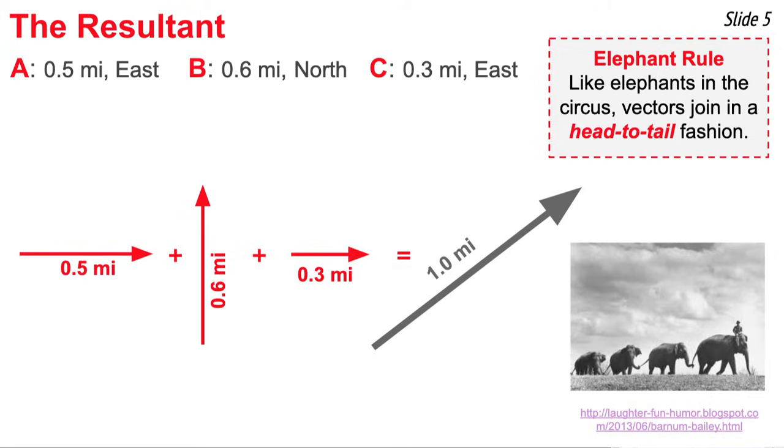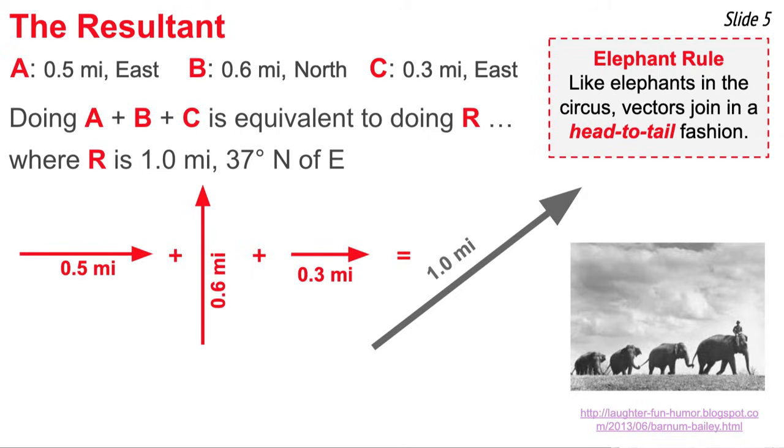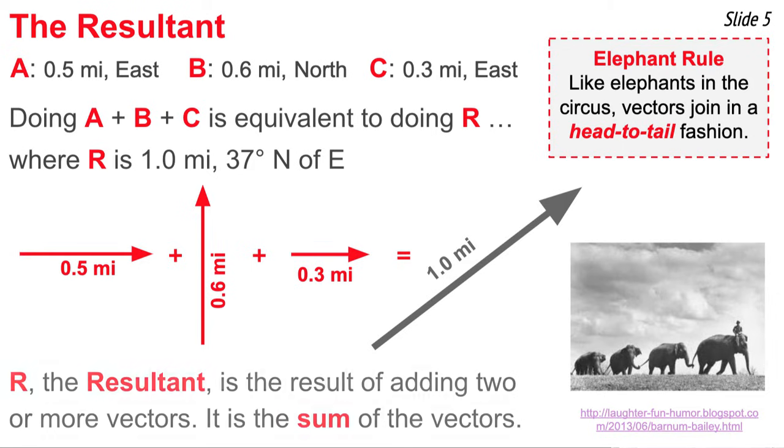As we've seen, when we apply this method to adding a, b, and c, we get a resultant. This resultant is equivalent to doing a plus b plus c combined. In other words, individually the resultant is equivalent to the sum of the three individual vectors. That's why we call the resultant the result of adding two or more vectors, or the sum of two or more vectors.